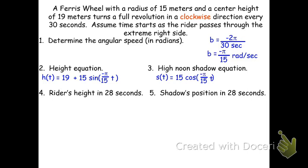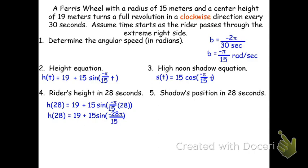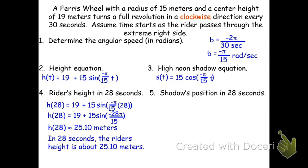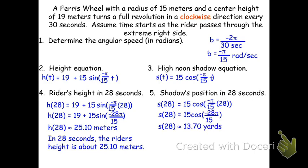Finding the rider's height and shadow position at 28 seconds: h(28) = 19 + 15·sin(−π/15 × 28) = 19 + 15·sin(−28π/15). Typing this into the calculator gives approximately 25.10 meters. For the shadow, s(28) = 15·cos(−28π/15) ≈ 13.70 meters — positive, meaning 13.70 meters to the right of center.